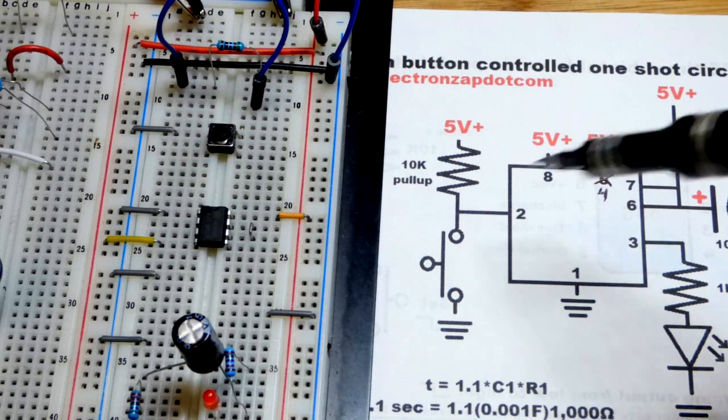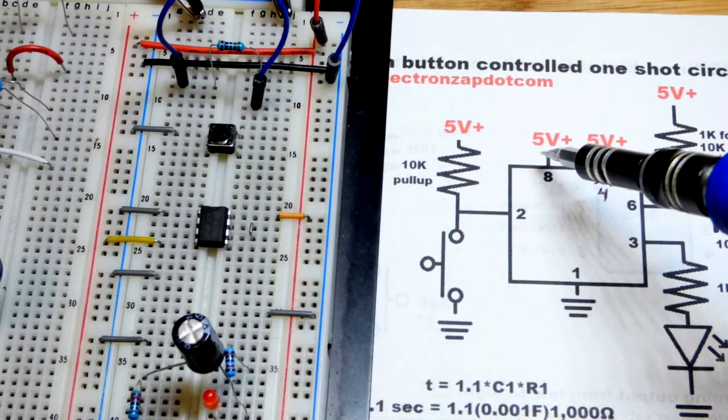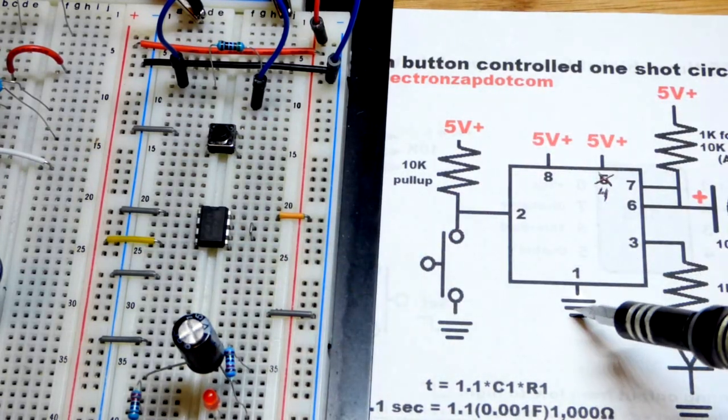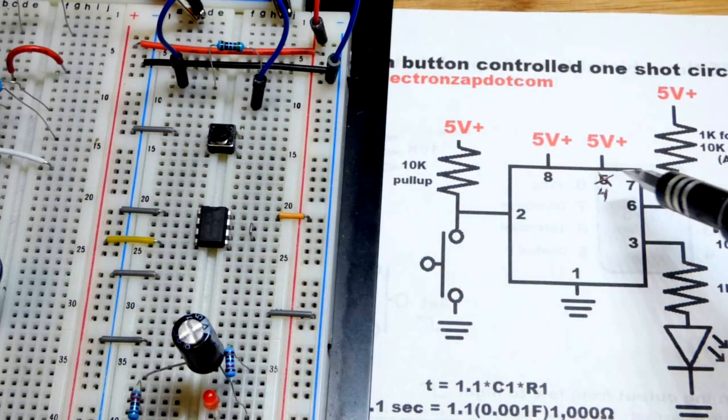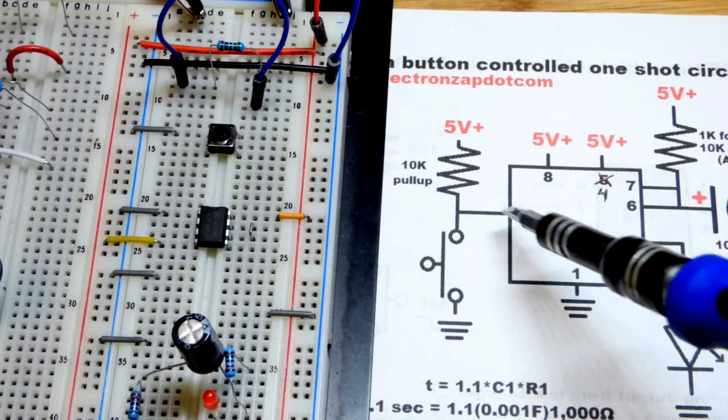So now we come back to the schematic and pin number eight there, that is the supply pin, pin number one, the other supply pin, the negative side, pin four, we got directly to the positive rail. I accidentally put five there, but crossed it out, wrote four, prevents it from doing anything.